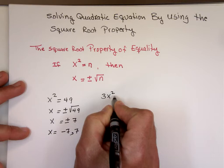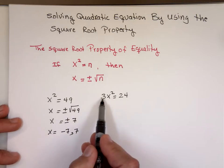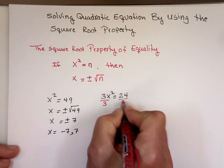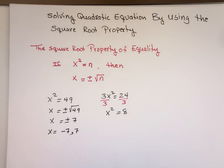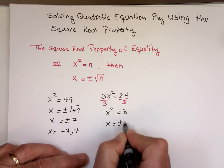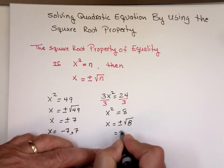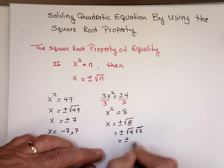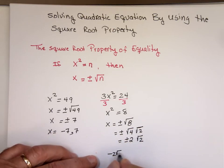If I have 3x squared equals 24, you can only use this method if you have x squared. The 3 is not squared, so that's a problem. To fix that, divide both sides by 3, giving x squared equals 8. That fits the form, so x equals plus or minus the square root of 8. Since 8 is 4 times 2, that simplifies to plus or minus 2 the square root of 2.